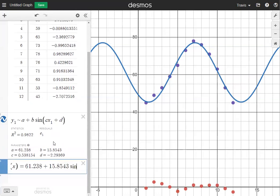And now I need sign inside parentheses. I'm going to have CX. C is going to be 0.538154, and then I'm going to put an X beside that. And then the last thing I need to do is add D. That's going to be minus 2.29369. And then I'm going to close up the parentheses.